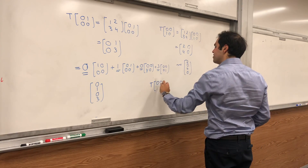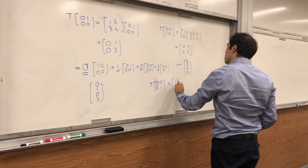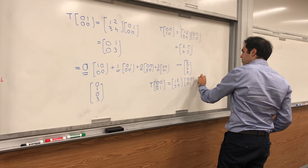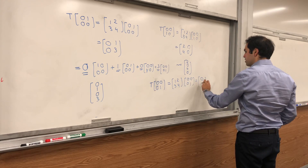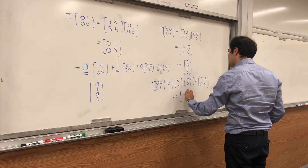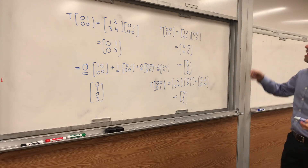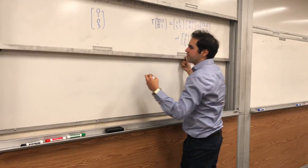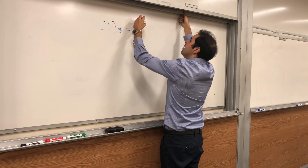Lastly, T([0,0,0,1]) = [1,2,3,4]×[0,0,0,1] = [0,2,0,4], and that just becomes [0,2,0,4].